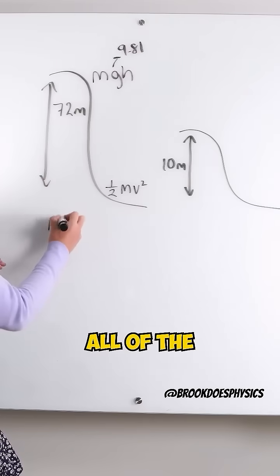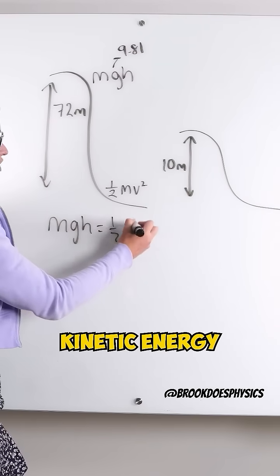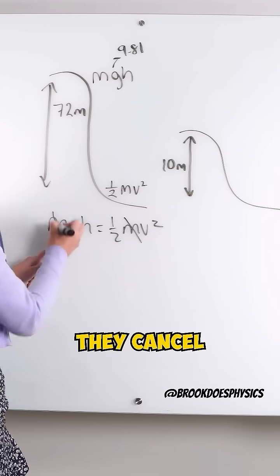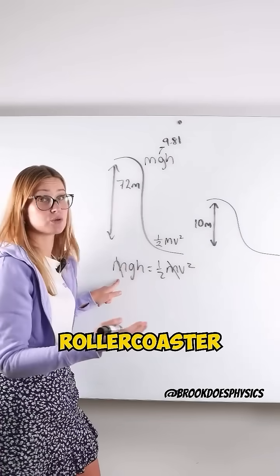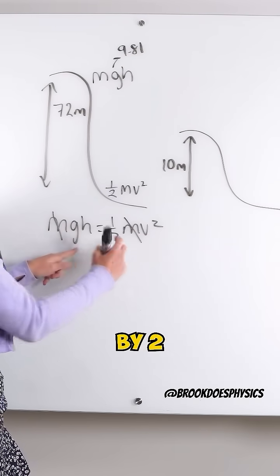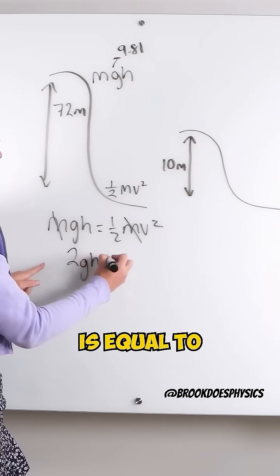Because all of the gravitational potential energy goes into the kinetic energy, we can see that mass on both sides cancels. It doesn't really matter how many people are on the roller coaster that day. To find V squared, I multiply both sides by 2, so 2GH is equal to V squared.